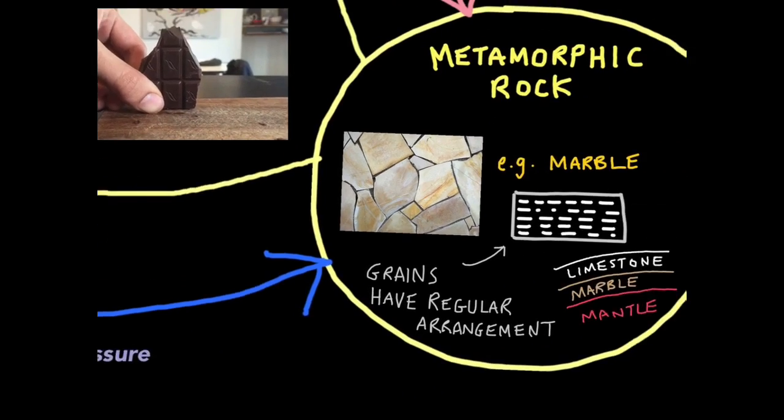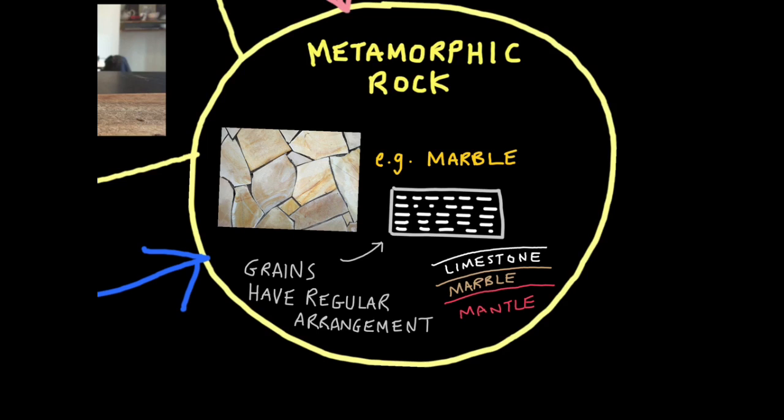Now the final rock group is metamorphic rock. The example you should know is marble, a metamorphic version of limestone. Metamorphic rock is what you get when you change either igneous or sedimentary rock due to heat and pressure. The word morph means to change. When rock like limestone or granite is compressed under heat and pressure and baked slowly over time, all the grains line up in a regular pattern. This is one property of metamorphic rock.